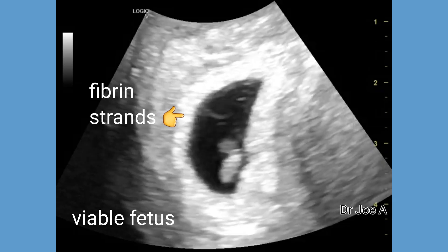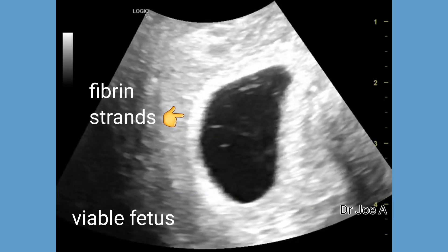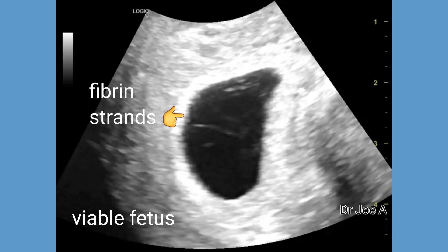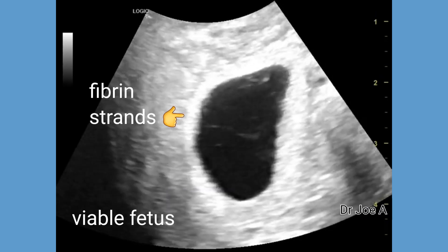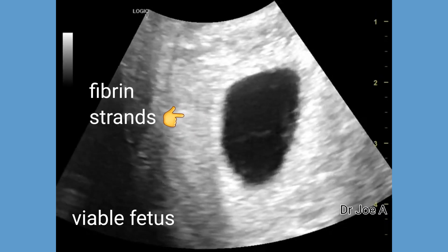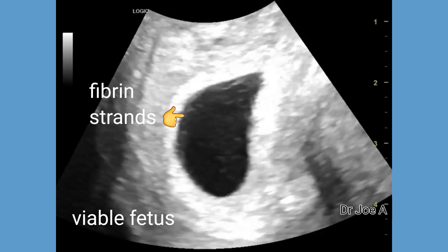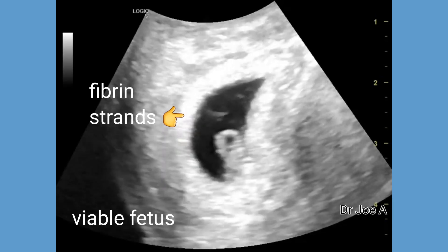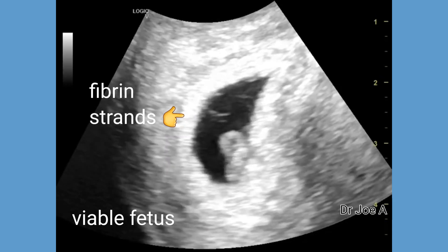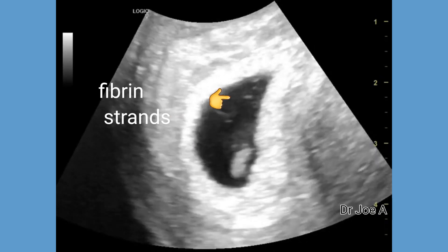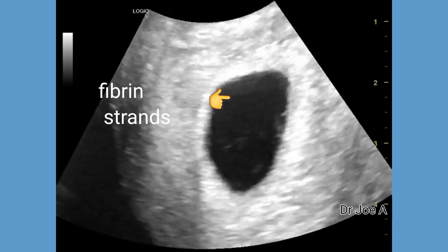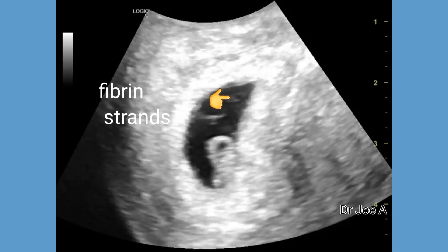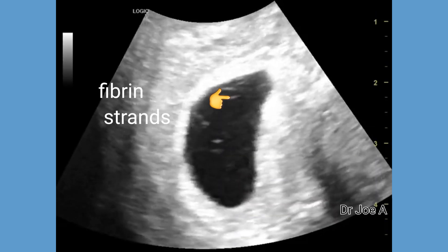What are fibrin strands? These are thin strands of fibrin that can be seen within the gestational sac. Their presence is not uncommon and is generally considered a normal finding in early pregnancy. They are thought to be the result of a normal breakdown of the embryonic membranes. Also, improvements in the resolution of trans-vaginal ultrasound transducers have made them easily visible.